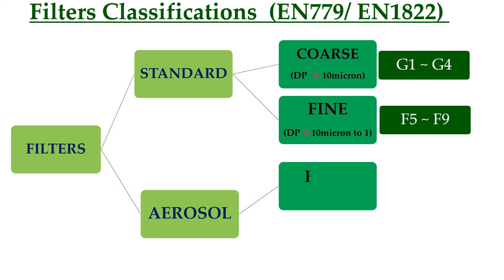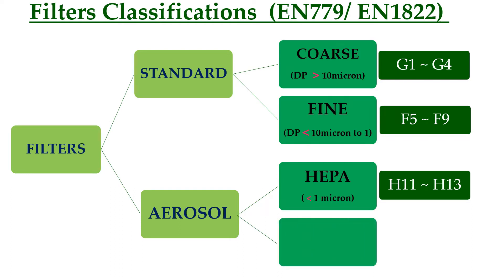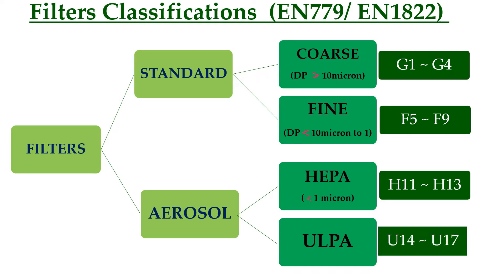Aerosol filters are subdivided into HEPA filters and ULPA filters. HEPA is H11 to H13, and ULPA is U14 to U17, for dust particulates less than 1 micron.